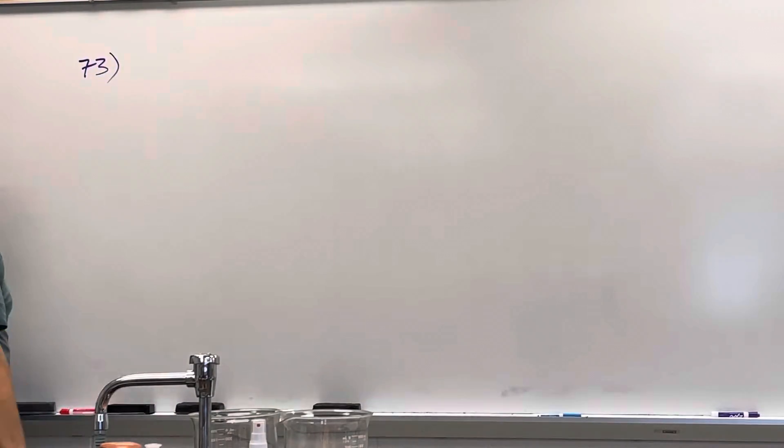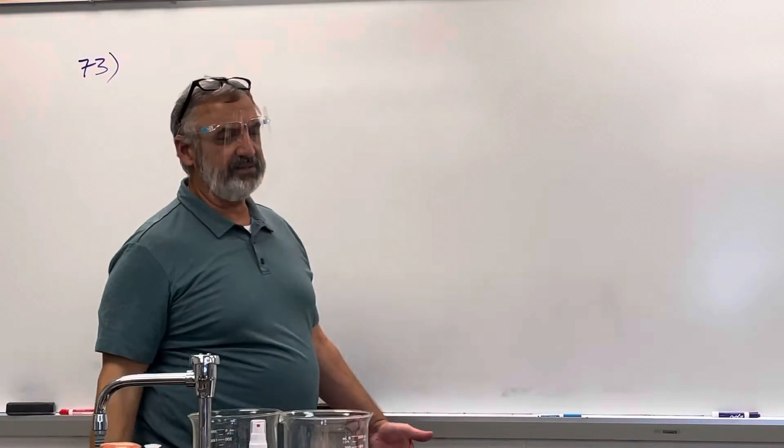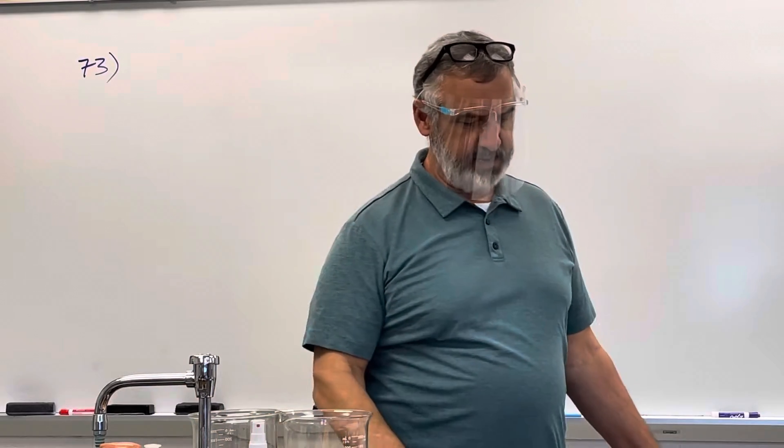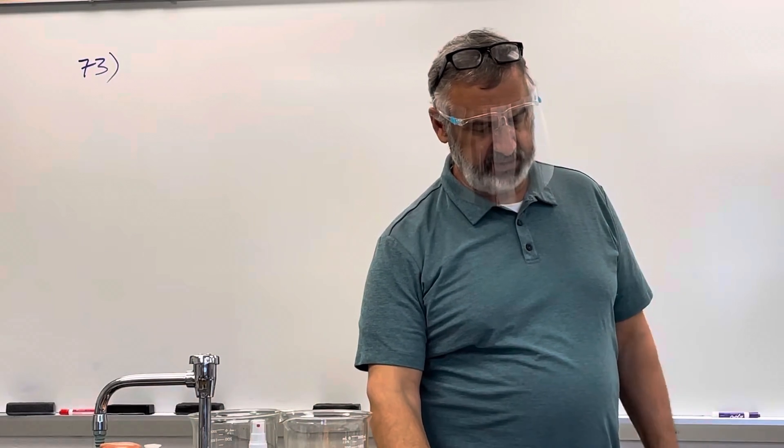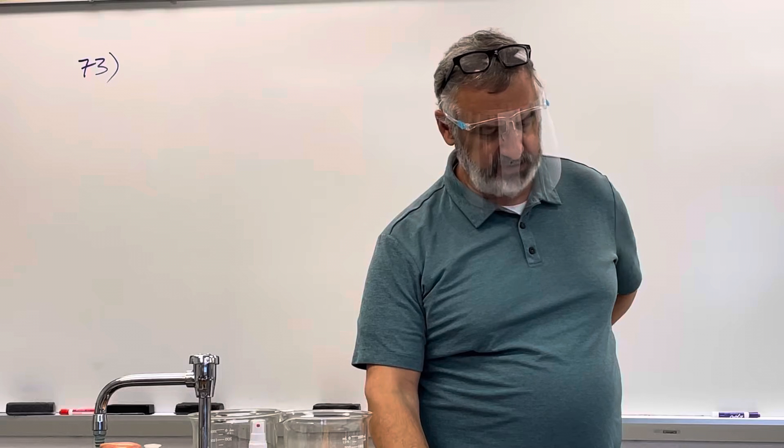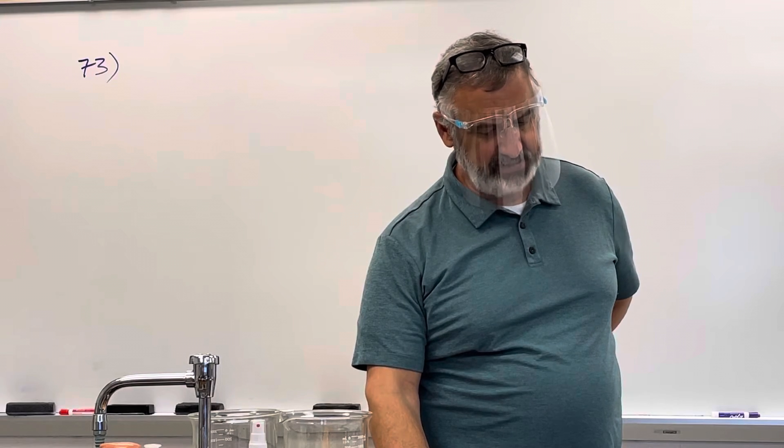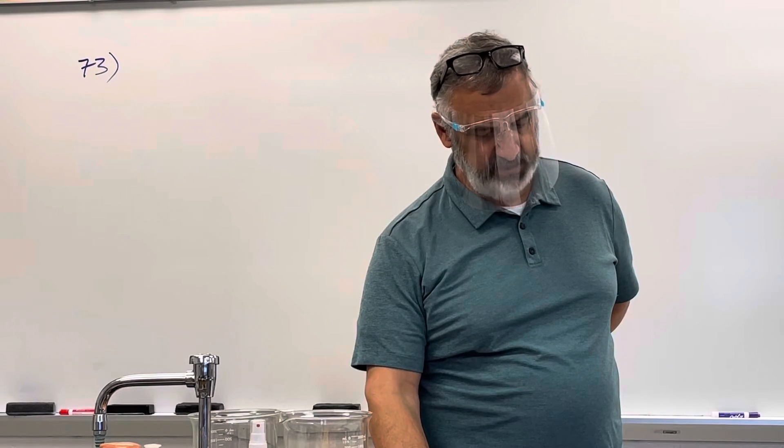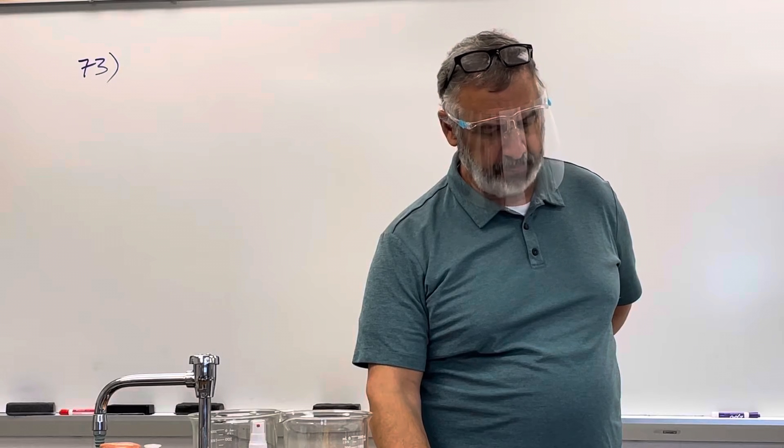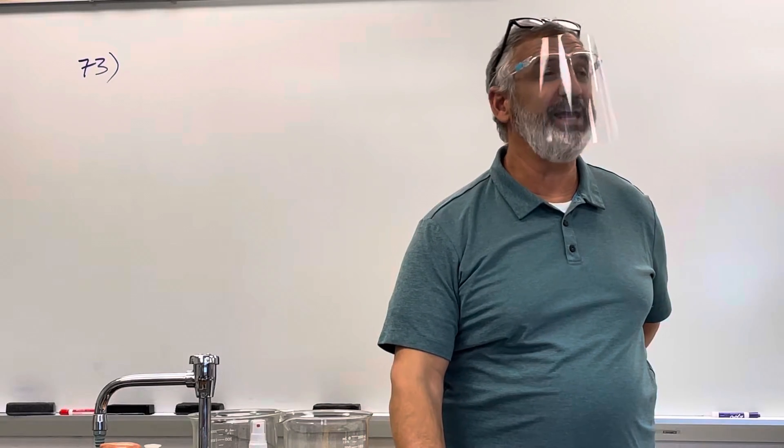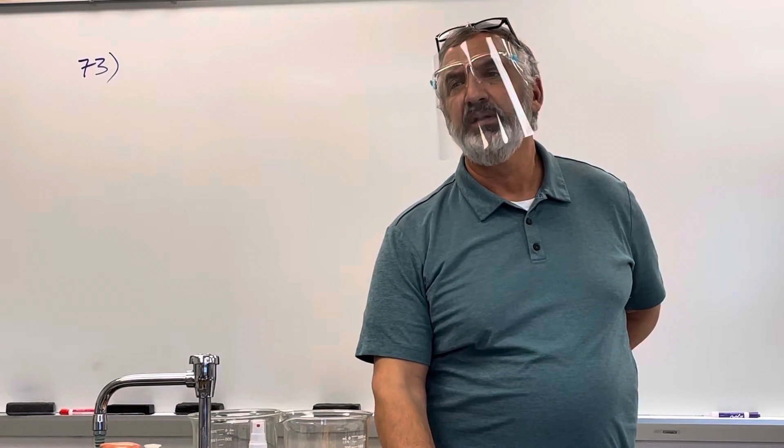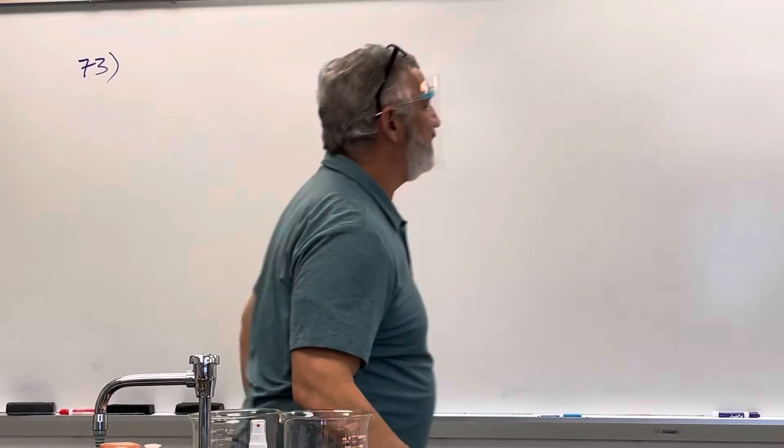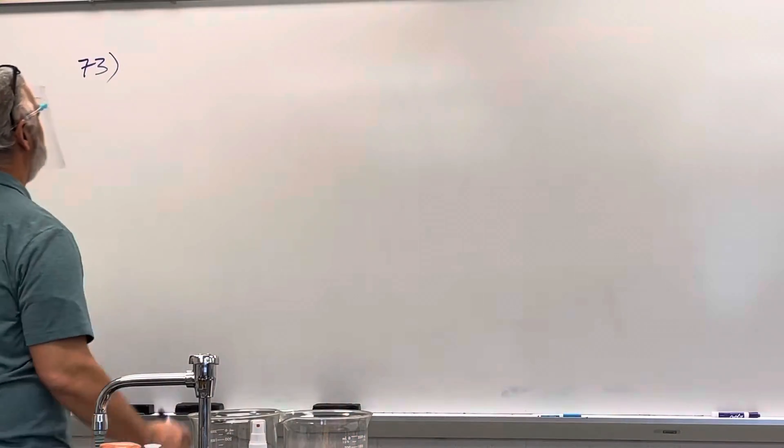All right, so 73. A gas sample is collected at 16 degrees and 0.982 atmospheres. If the sample has a mass of 7.4 grams and a volume of 3.96 liters, find the volume of the gas at STP and the molar mass. I know a pressure, I know a volume.